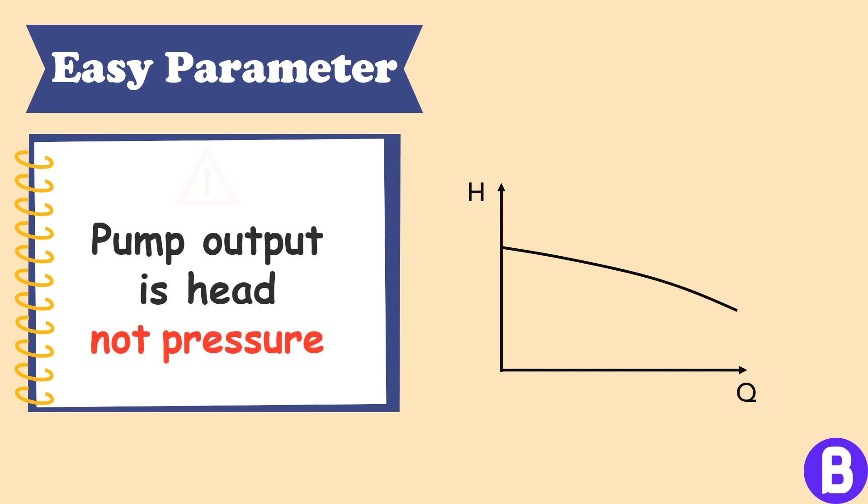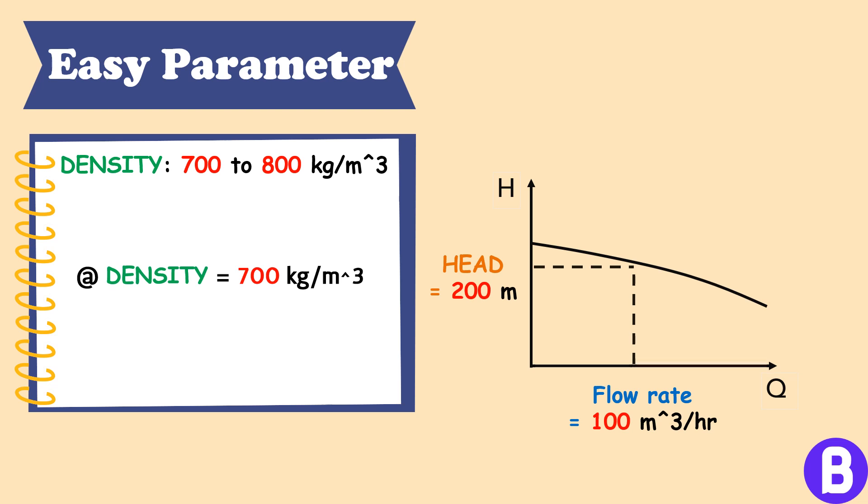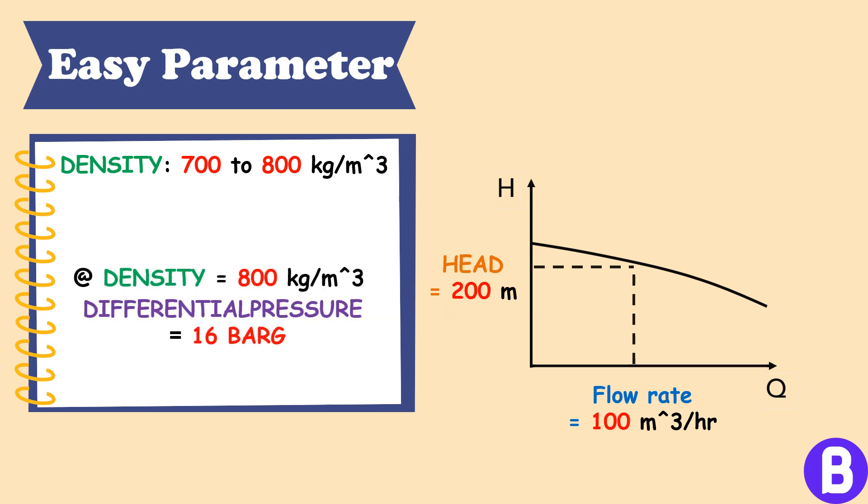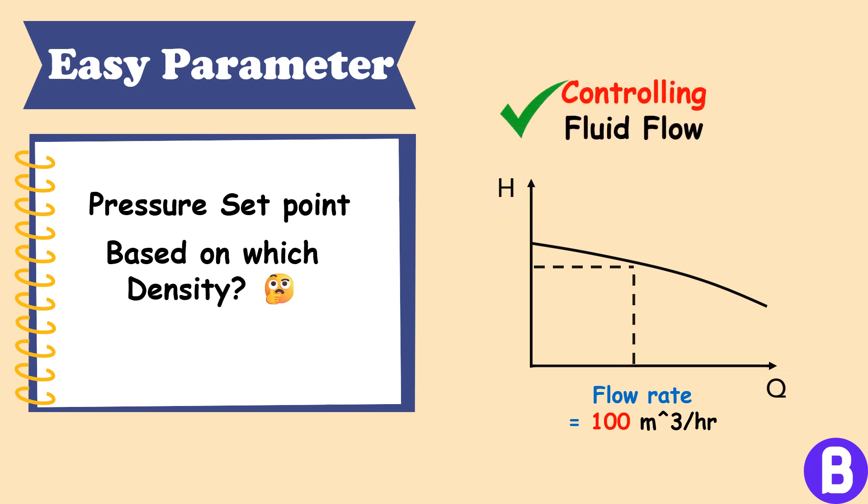So if there is a variation in fluid density, adding a pressure set point may not guarantee that the pump is at a desired flow region. For example, if we have a fluid with a density ranging from 700 to 800 kilograms per cubic meter, and the pump is expected to work at 100 cubic meters per hour. If we opened the pump curve, the expected head at 100 cubic meters per hour is 200 meters for example. So if the fluid density is 700 kilograms per cubic meter, the discharge pressure needed to give 100 cubic meters per hour shall be around 14 bar. However, if the fluid has a density of 800 kilograms per cubic meter, the pressure shall be around 16 bar. This means that the set point of the controller should be continuously changed depending on the current fluid density, which is not very practical. So controlling the fluid flow would be much easier in this case.